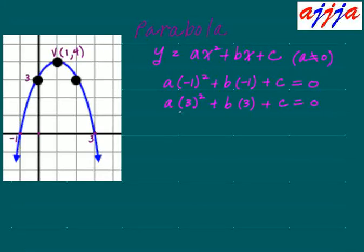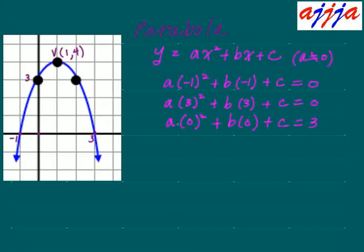3 is the y-intercept, so that coordinate is 0, 3. That means we plug 0 for x: a times 0 squared, plus b times 0, plus c equals y, which is 3. Since 0 squared is 0, we can erase those terms. So c equals 3. Then instead of c, we can substitute 3 — so we put 3 in both equations.